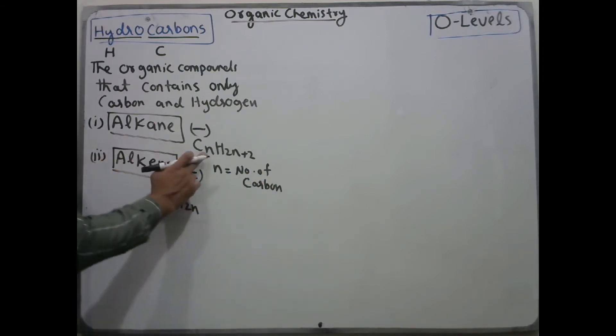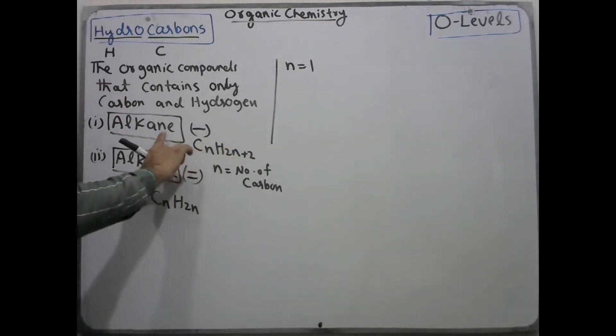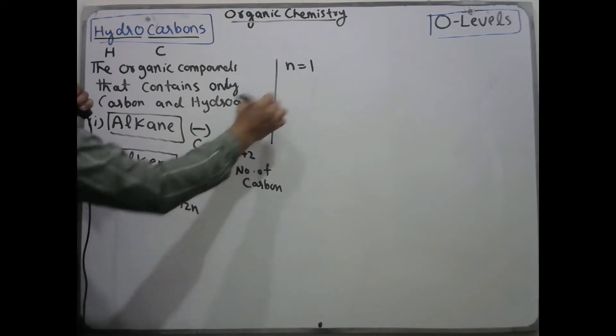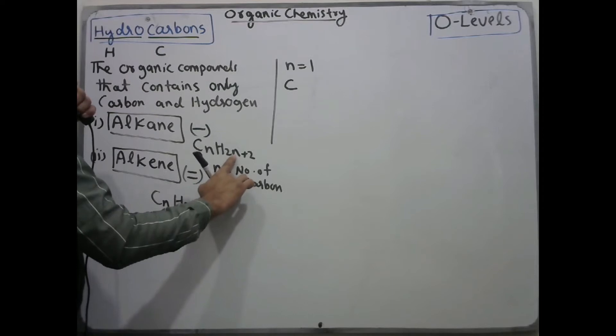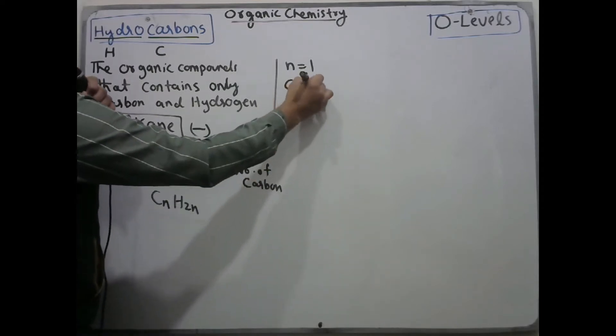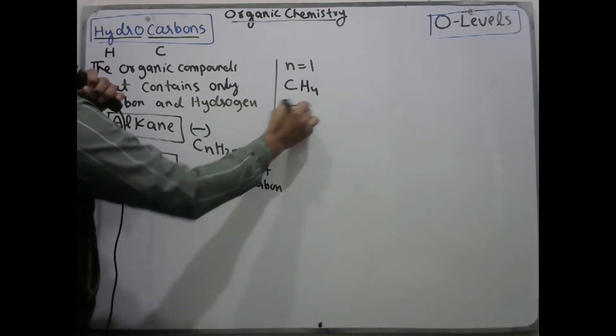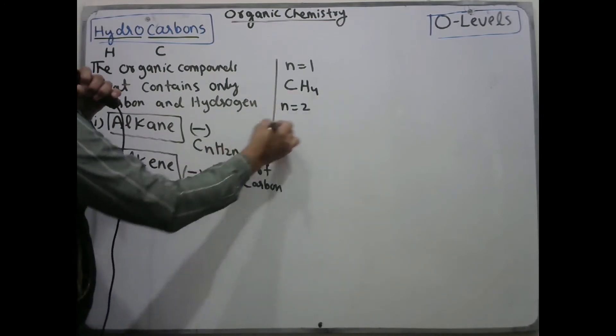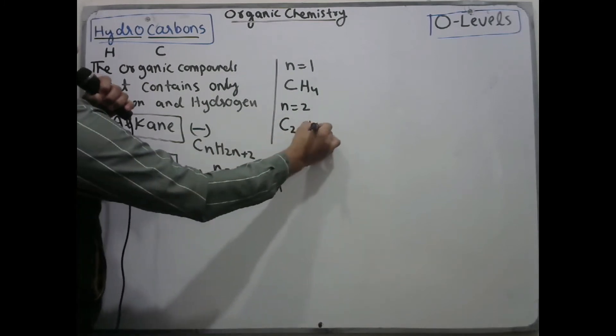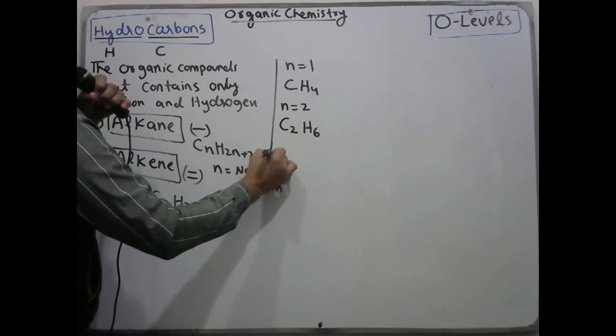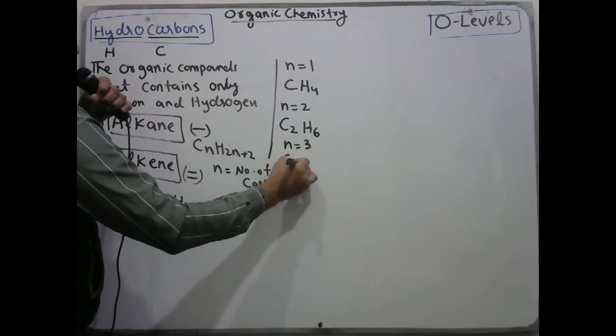Now take some examples. For alkanes, if I put n equal to one, the molecular formula becomes C1, and here two times one is two, plus two equals four. So the simplest organic compound is CH4. If you put n equal to two here, the answer is C2H6: two times two is four, plus two equals six.